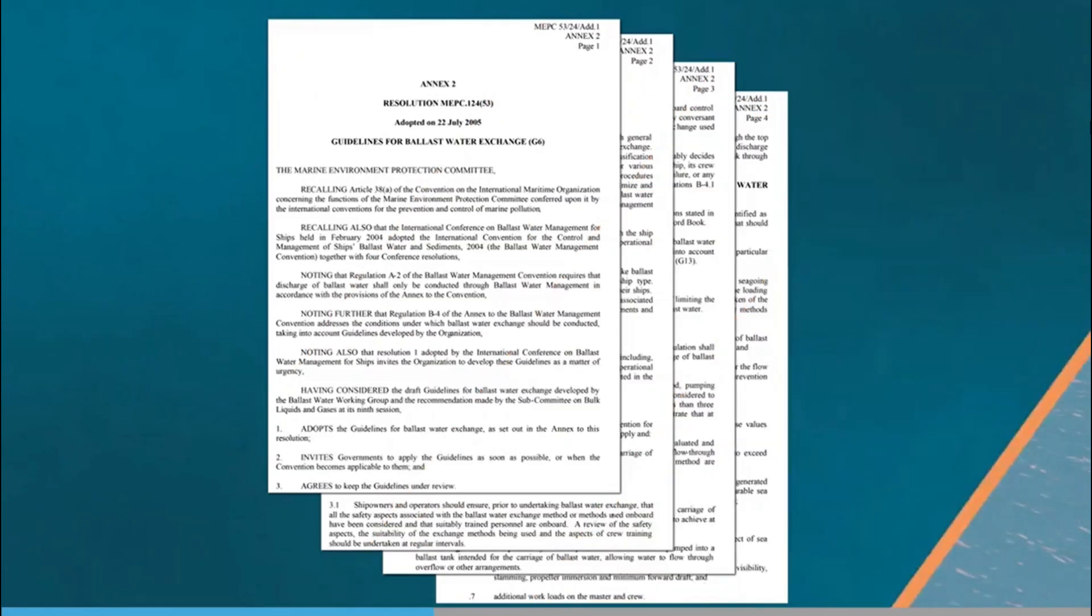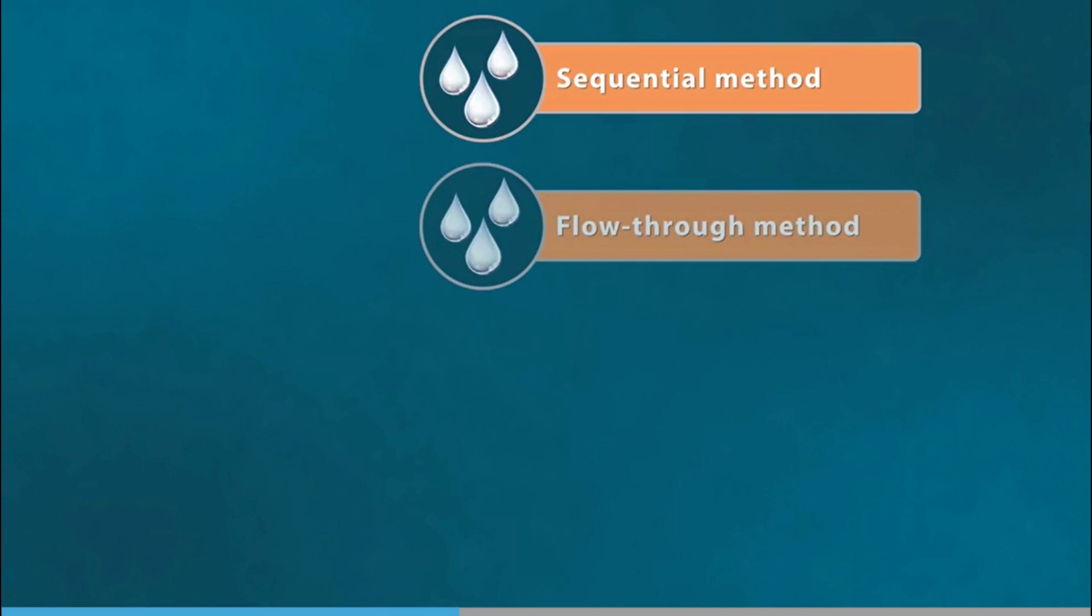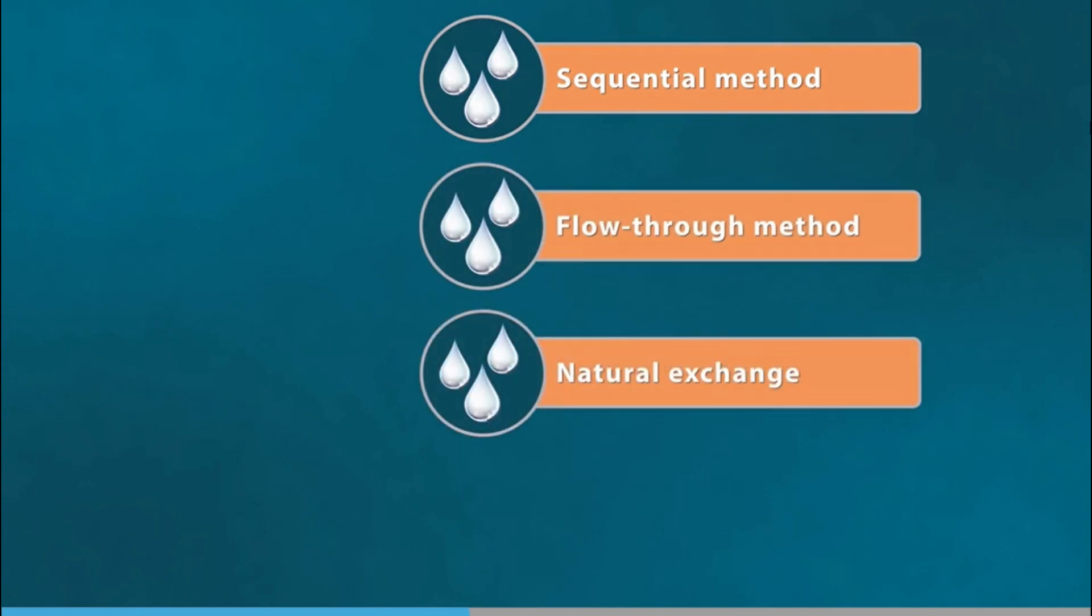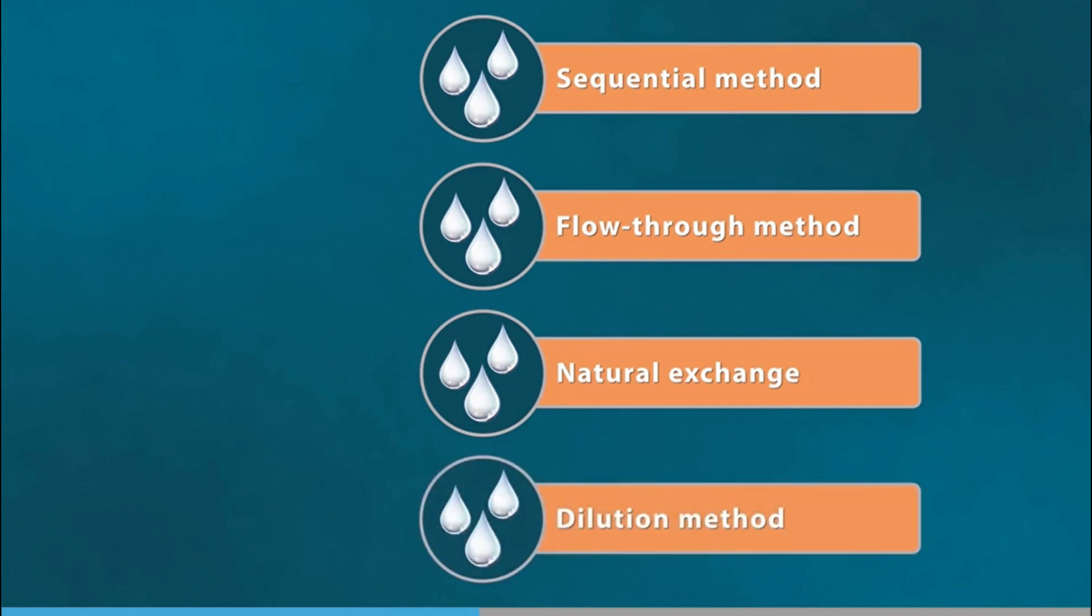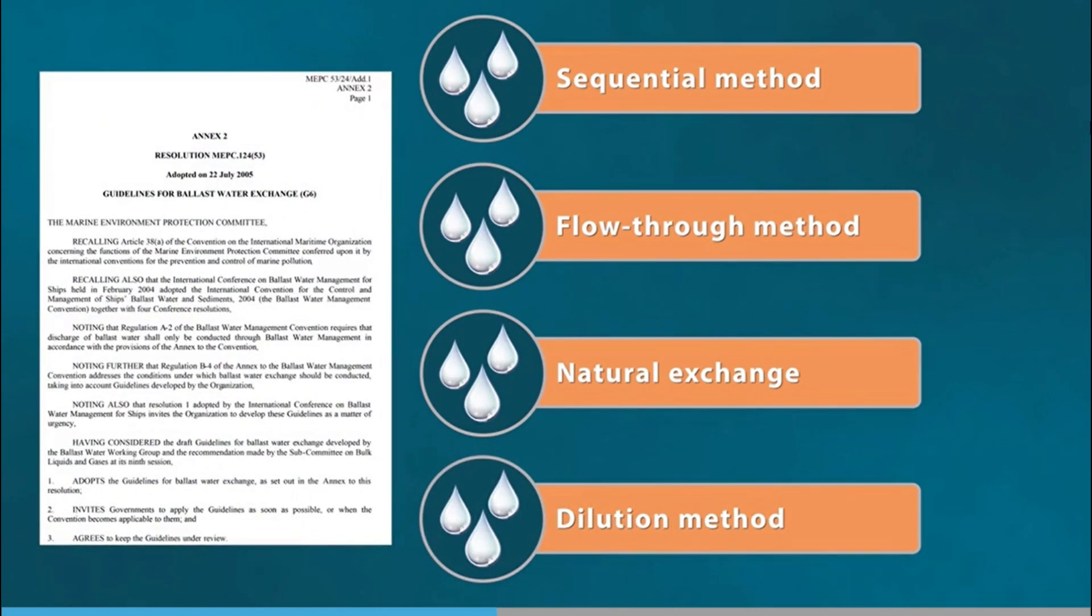The G6 guidelines for ballast water exchange describes three different main methods for ballast water exchange: sequential method, flow-through method, of which the natural exchange method can be considered a special case, and dilution method. Each method has advantages and disadvantages. The G6 guidelines provide detailed advice on safety precautions to be observed during the exchange.